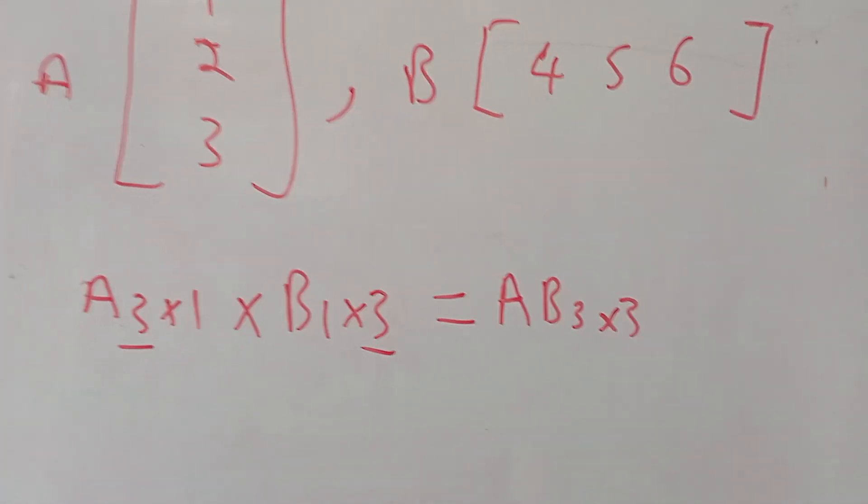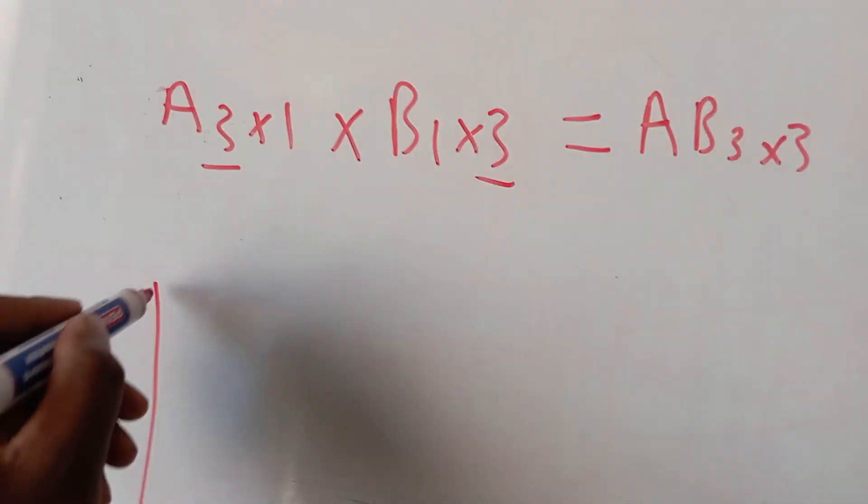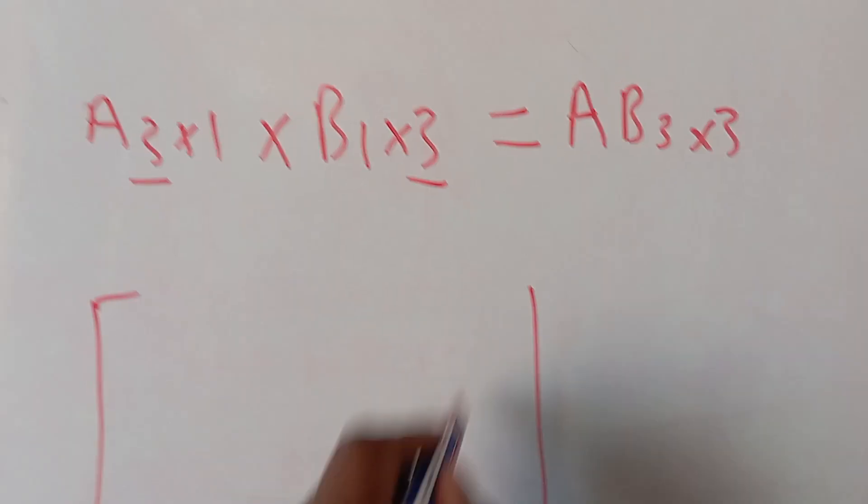Right, so we know that AB is a 3 by 3 matrix. So this is how we're going to do it.